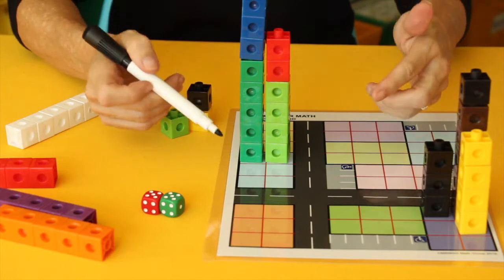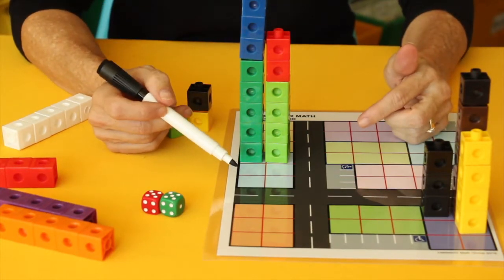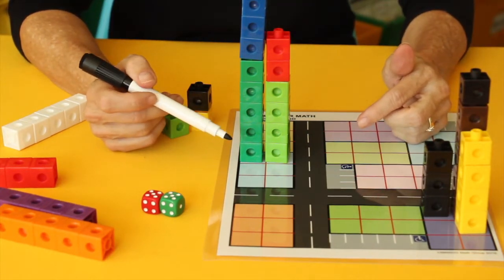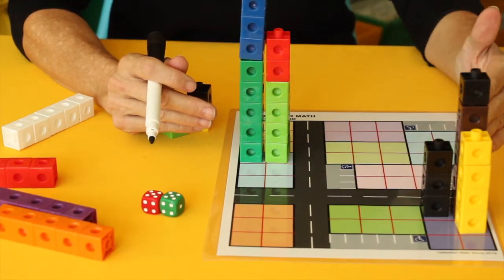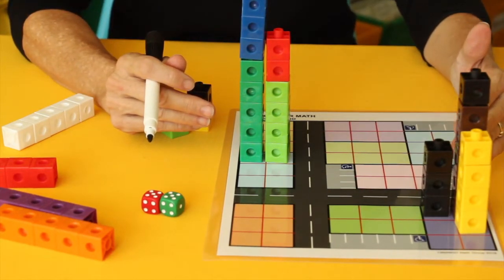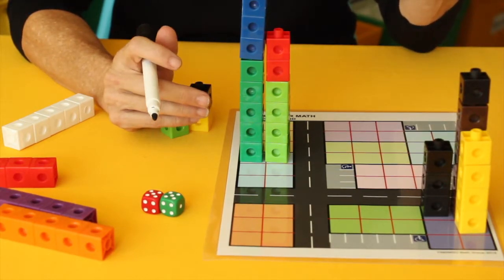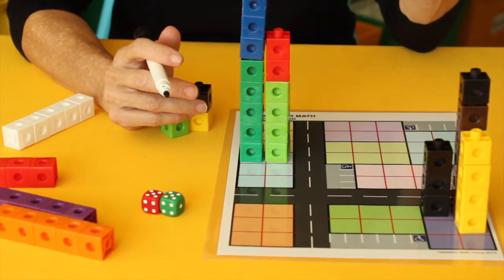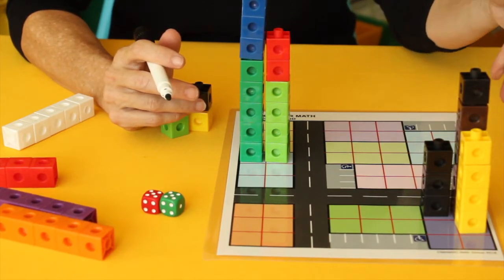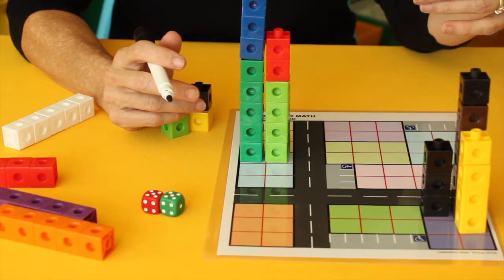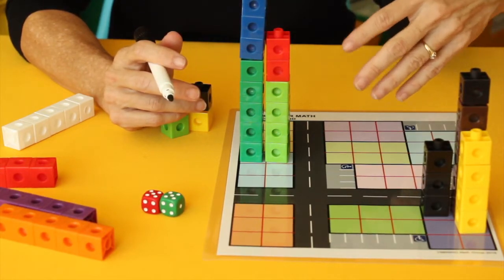As they fill up their block, which has six squares in it, they're going to then compare their city block to their friend's city block. And they're going to say things like, my tallest building is three floors higher, three blocks higher than your building. Or my smallest building is two blocks less than your smallest building.